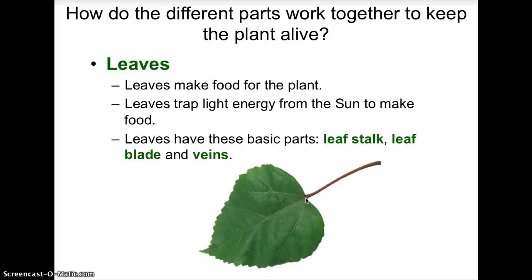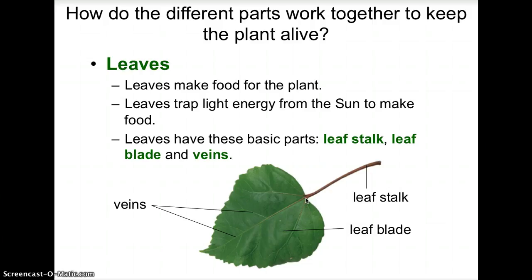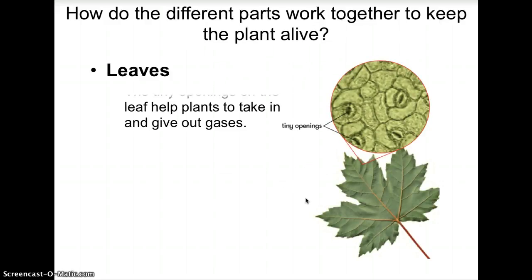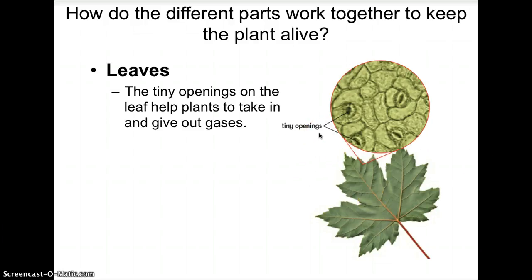Leaves also have basic parts: the leaf stalk, the leaf blade, and veins. You can pause the video any time to take notes. If you were to look very closely, or use a microscope, you would see tiny openings on the leaf called stomata. Stomata help the plant to take in and give out gases, and they are usually found on the underside of the leaf.